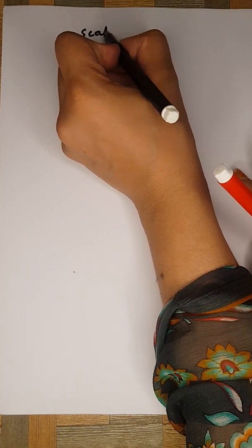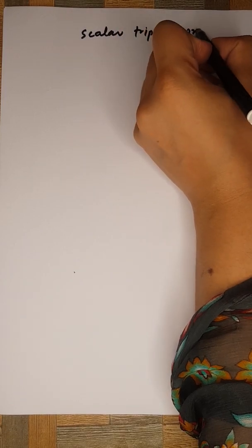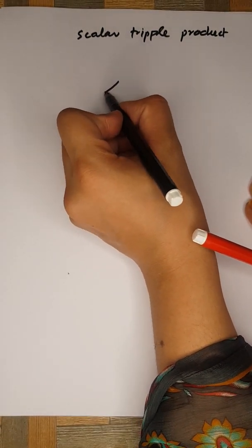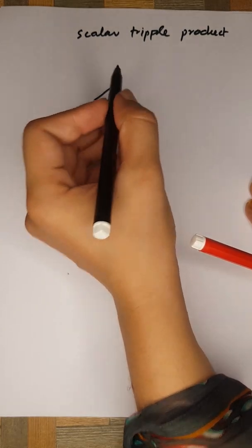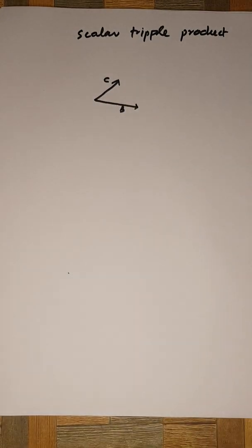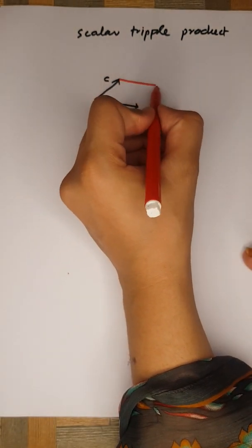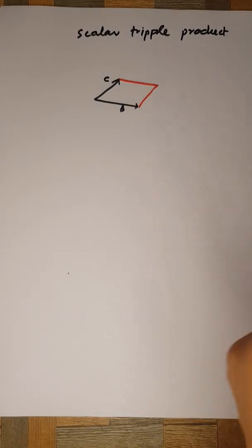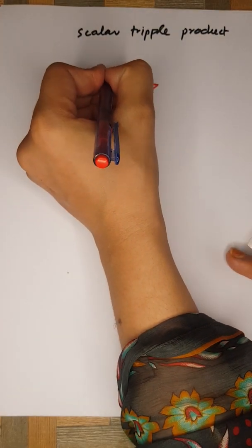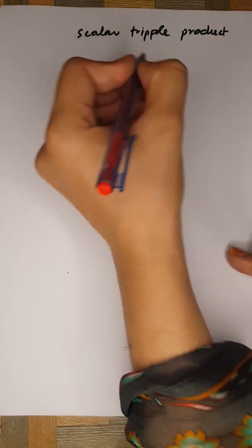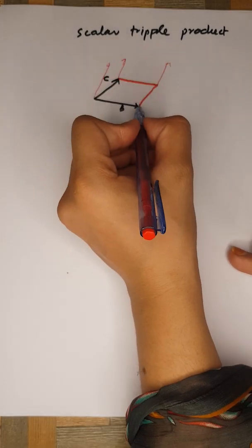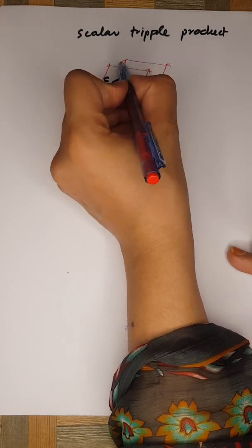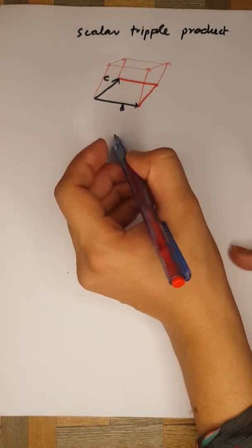Looking at the physical interpretation of the scalar triple product, you can see that it actually forms a parallelepiped. We can draw it like this: there is a certain vector c, a certain vector b, and first let's form the plane formed by these two vectors. There is also the vector a, and we give height to each side individually. Joining them, you can see clearly this actually forms a parallelepiped.